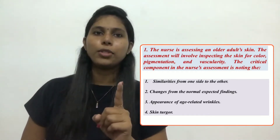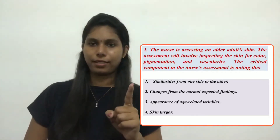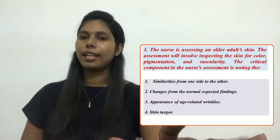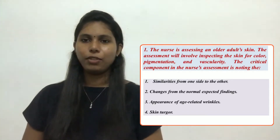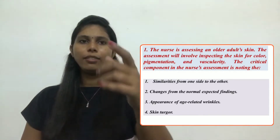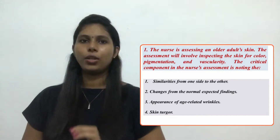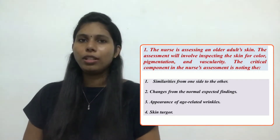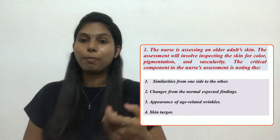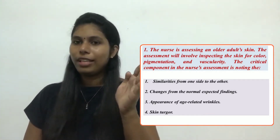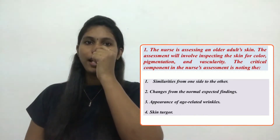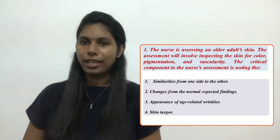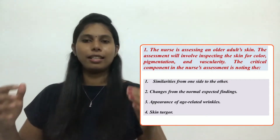Let's work through the options. The first option — similarities from one side to the other — do you think that is the critical priority component here? I don't think so; we can eliminate that one. The option of appearance of age-related wrinkles: we know that older adults are expected to show wrinkles, and that is an expected assessment finding, so we do not need to give that high priority. We can eliminate that option as well.